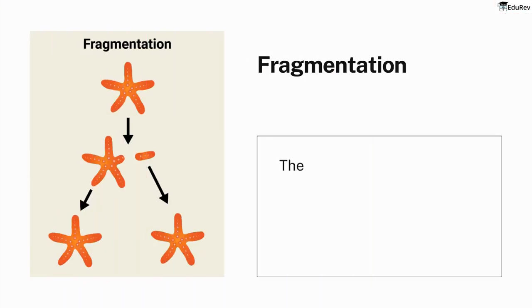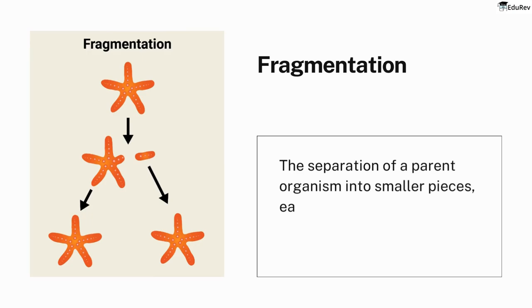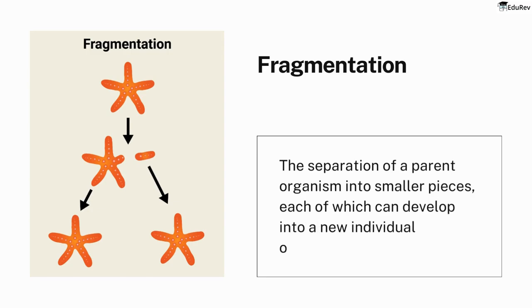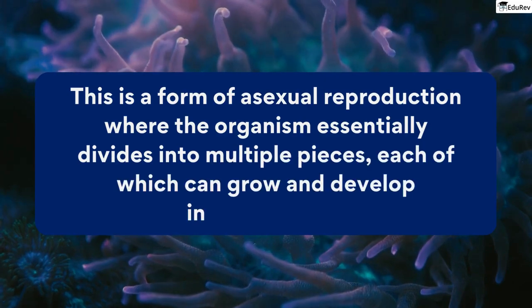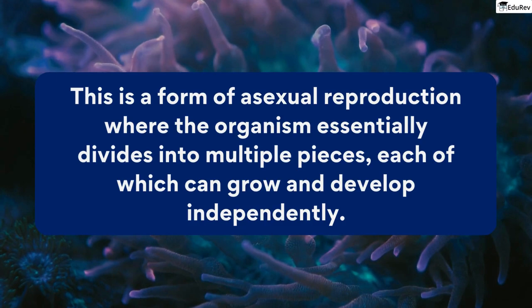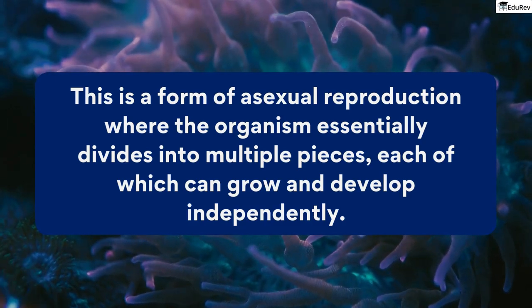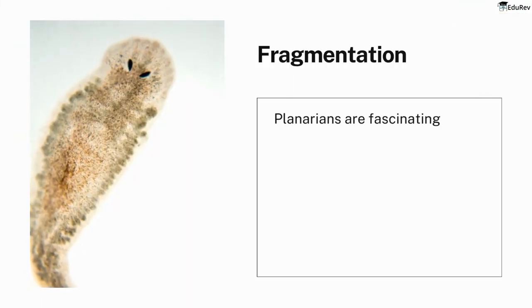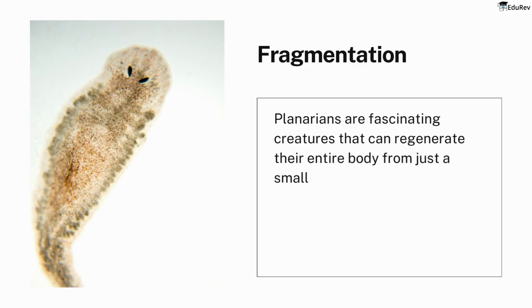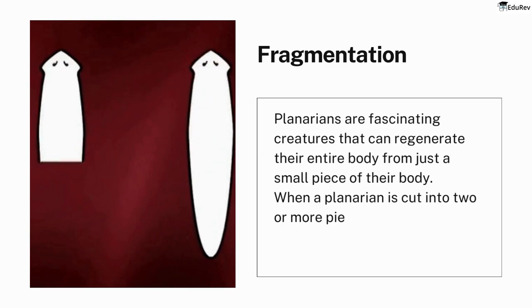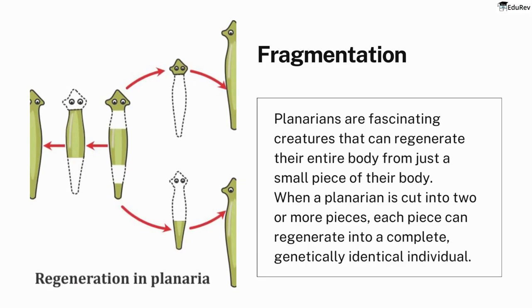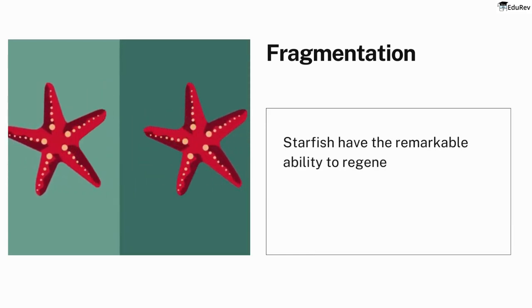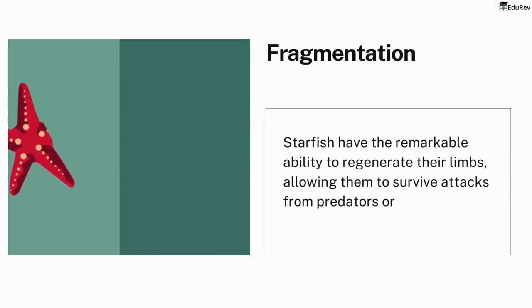The next process is fragmentation, which involves the separation of a parent organism into smaller pieces, each of which can develop into a new individual. To understand fragmentation, let's take the example of a planarian, a type of flatworm that lives in freshwater habitats. Planarians can regenerate their entire body from just a small piece. When cut into two or more pieces, each piece regenerates into a complete, genetically identical individual. Fragmentation also occurs naturally in starfish, which can regenerate their limbs after predator attacks.